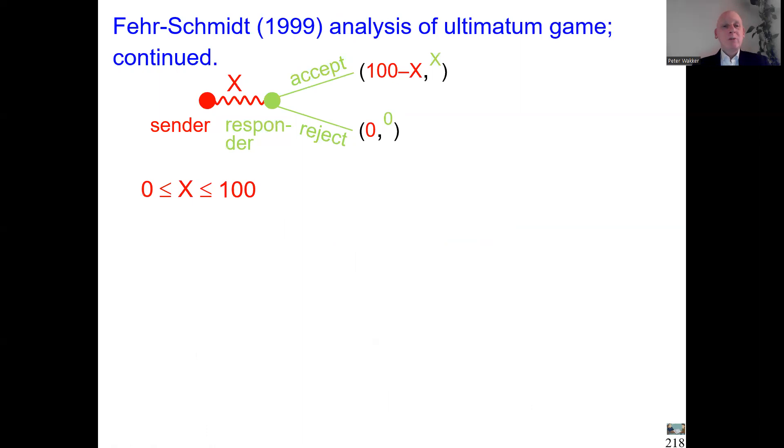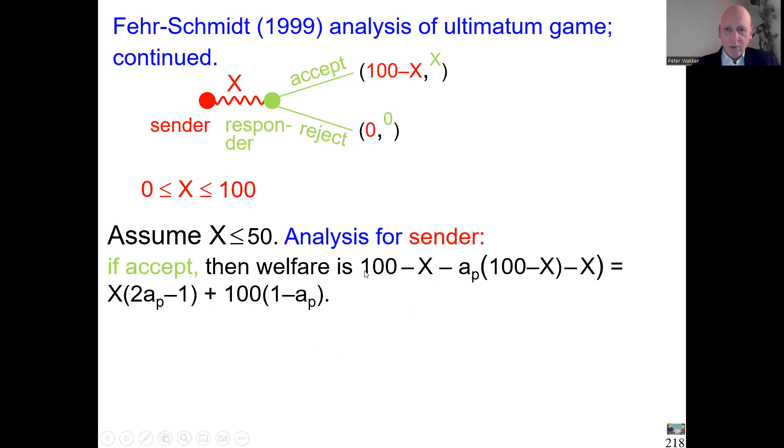Now we continue analyzing the game from the perspective of the sender. If the case of rejection, then the sender has just welfare zero. So let us analyze what is the happiness of the sender in case of acceptance. I write the Fehr-Schmidt model. We know X less than 50, so the sender is ahead. The wealth that the sender has is 100 minus X. The inequality is that payoff minus the payoff for the responder. So this difference will be multiplied by the index of aversion of being ahead. And a_p is abbreviating proposer, we now say sender. This is my notation of the subjective index of being ahead of the sender. We can rewrite X happens 2a_p minus 1 times.